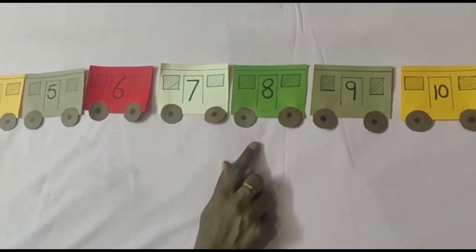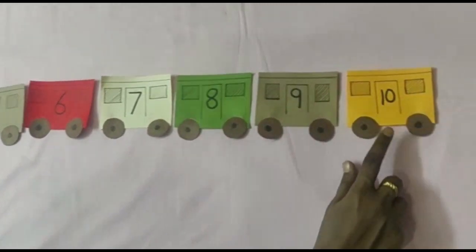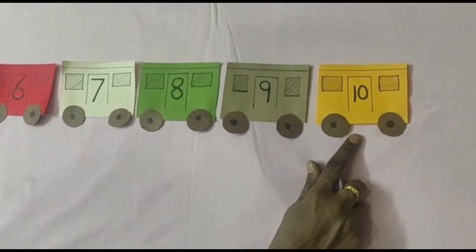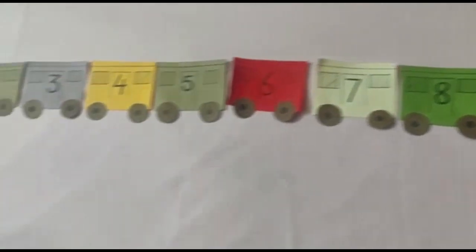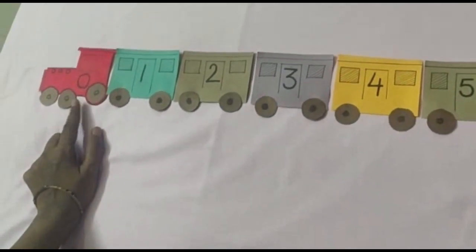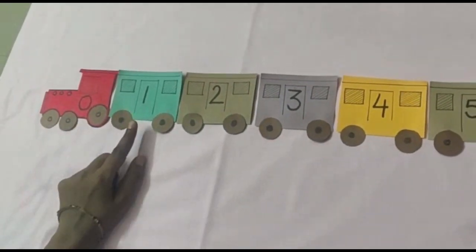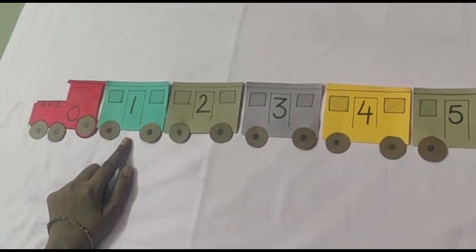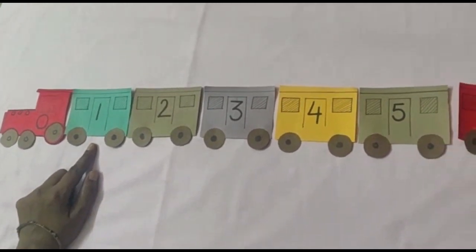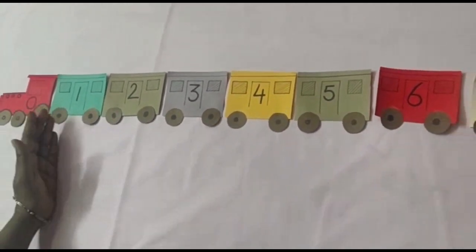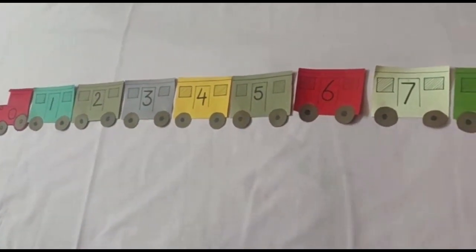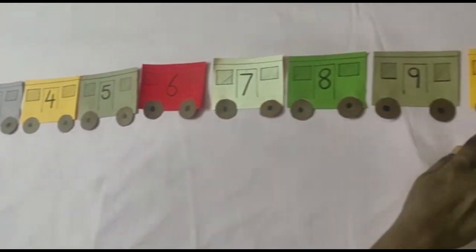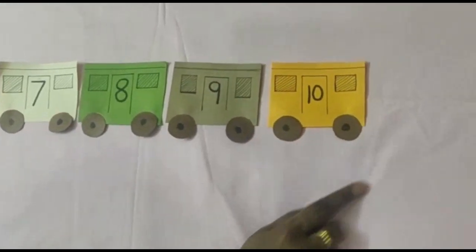Which coach is after nine? Coach number ten. Which coach is after zero? After zero, one. Now you understood what are after numbers? The numbers next to the number. Now what will come after ten? Yes, eleven. Now after eleven, twelve.